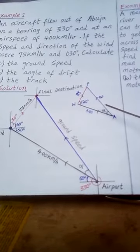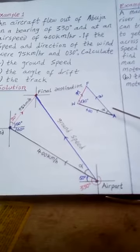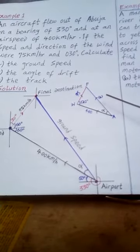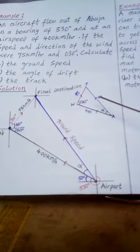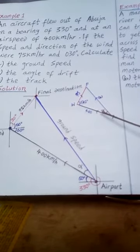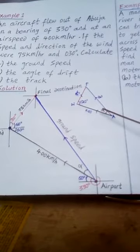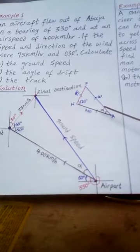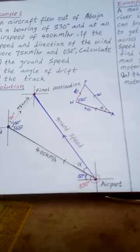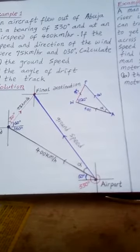W is the actual speed or the ground speed of the aircraft. In order to find W, we are going to employ the cosine rule. And in order to find alpha, which is the angle of drift, we are going to employ the sine rule. And the track simply means the bearing of the ground speed.